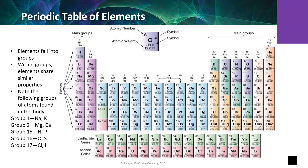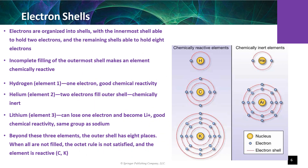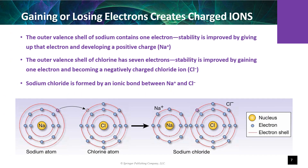The elements of the periodic table are classified by their atomic structure. The atomic number is the number of protons in the nucleus. Electrons are arranged on energy levels known as shells; the inner shell only holds two electrons. The octet rule states that atoms want to occupy the valence shell and have eight electrons in that shell. For example, sodium is assigned atomic number 11 because it has 11 protons in the nucleus.